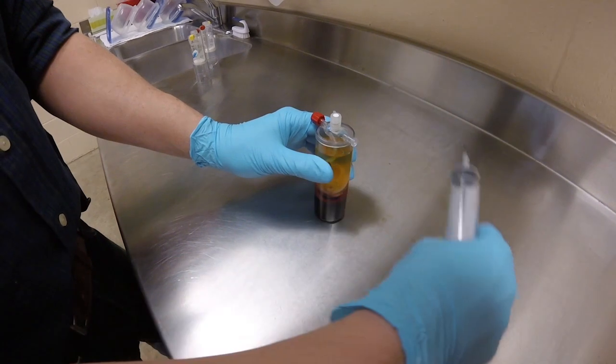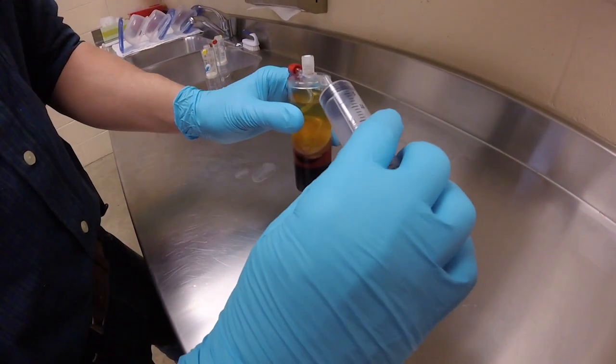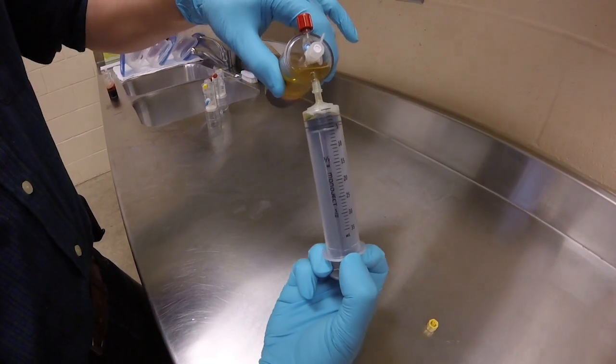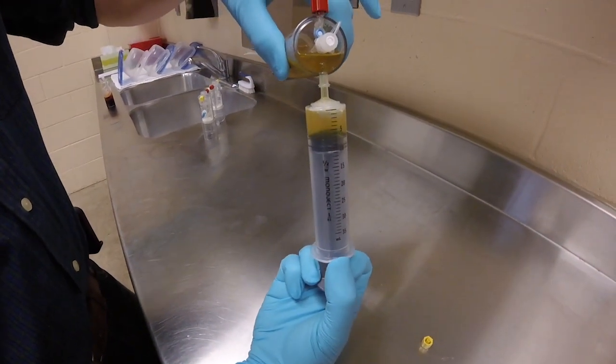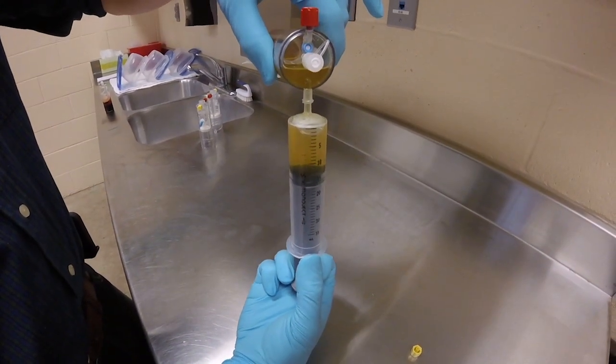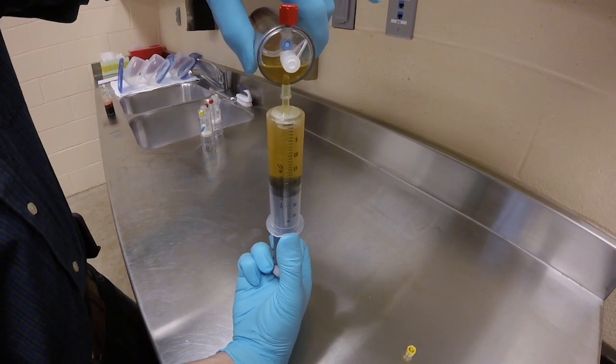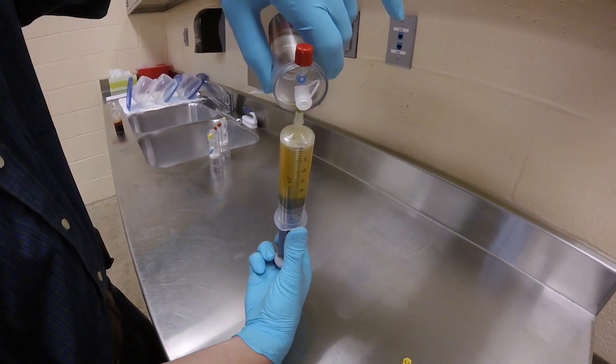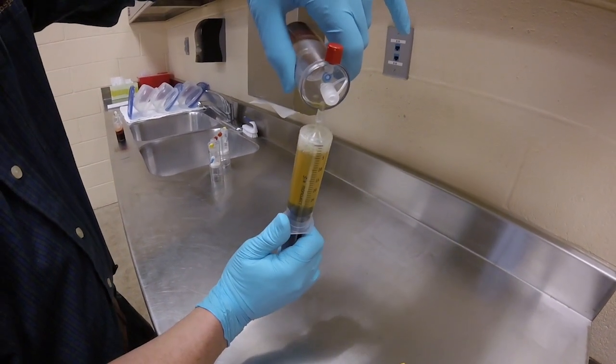When removing the platelet poor plasma, tilt at an angle but avoid inverting, keeping the fluid below the top blue vent. When complete, replace the yellow cap on the device. The platelet poor plasma that has been removed can be discarded.